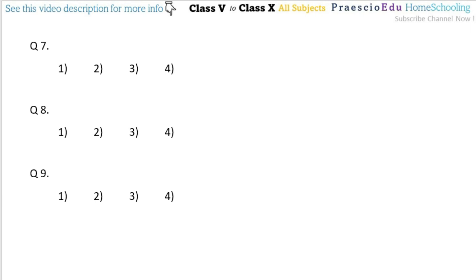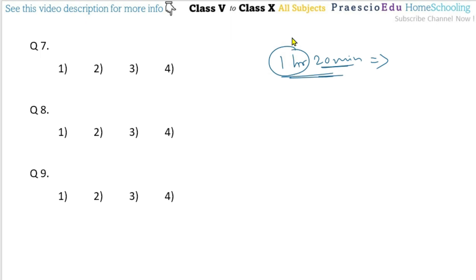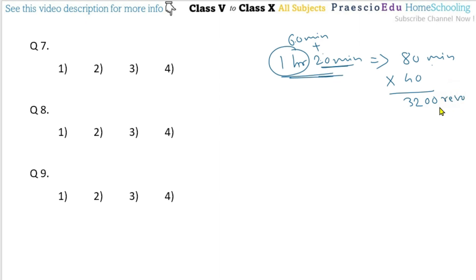Question 7: A blade of a fan revolves 40 times a minute. How many revolutions will it make in 1 hour 20 minutes? Convert 1 hour 20 minutes to minutes: 60 + 20 = 80 minutes. In 1 minute it revolves 40 times, so multiply: 80 × 40 = 3200 revolutions. This is shown in option number 2.